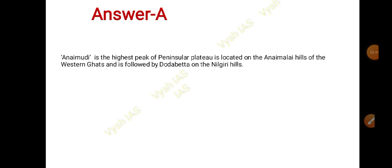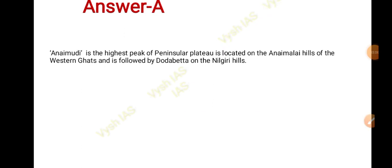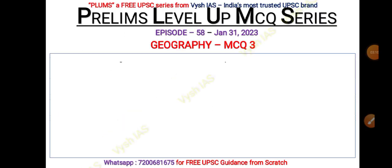The answer is A — Nilgiri Hills. First of all, Annamalai Hills in the Western Ghats is where Anaimudi, the highest peak of the Western Ghats, is located. It is followed by Doddabeta, which is situated on the Nilgiri Hills. The common link I was hinting at — please comment — and write your score as well in the comment section.